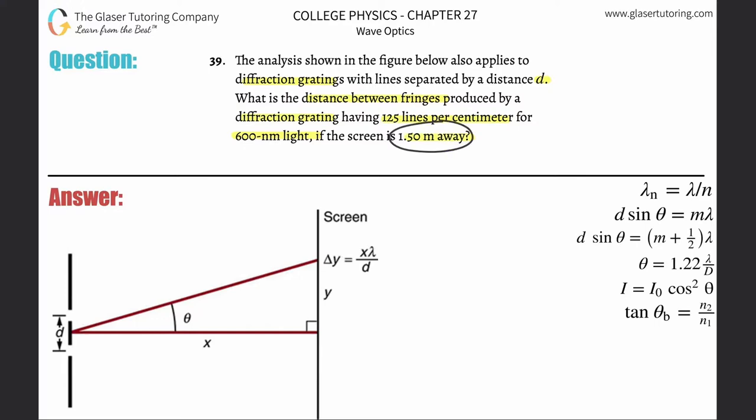Alright, it's a lot to unpack. The screen is 1.5 meters away. So here's the screen over here, and here's your diffraction grating. The distance between them, which is x, is 1.50 meters. What we're asked to find is y. Just keep that in mind.